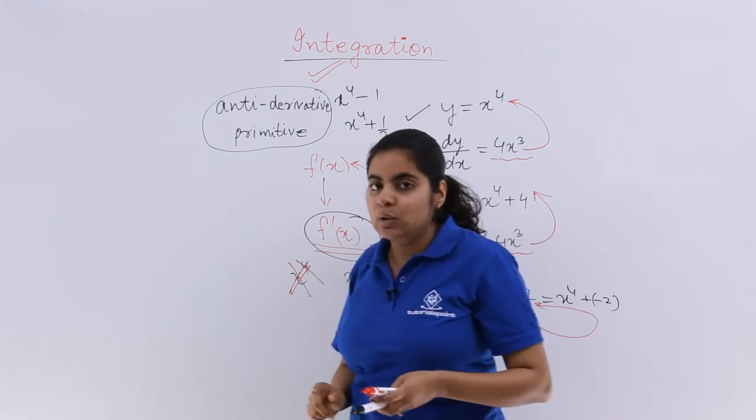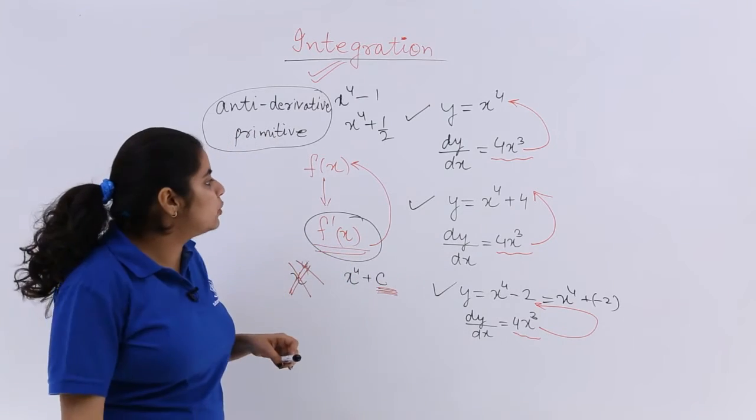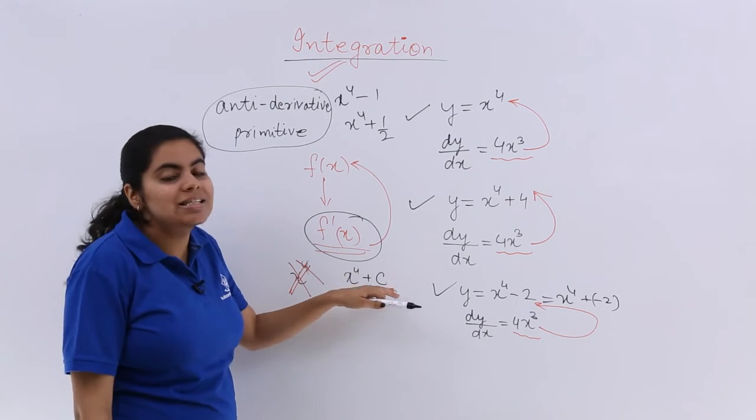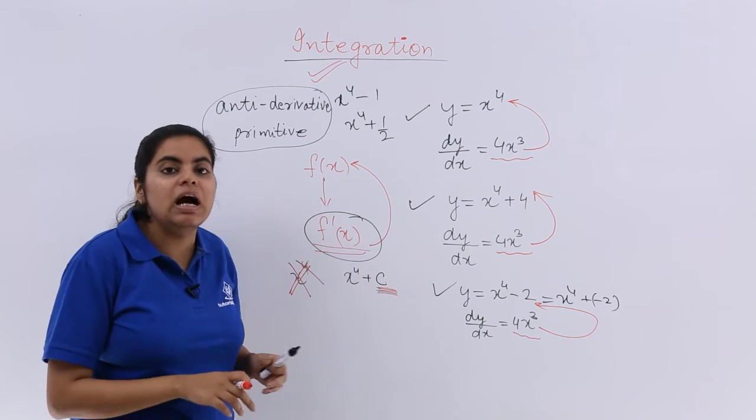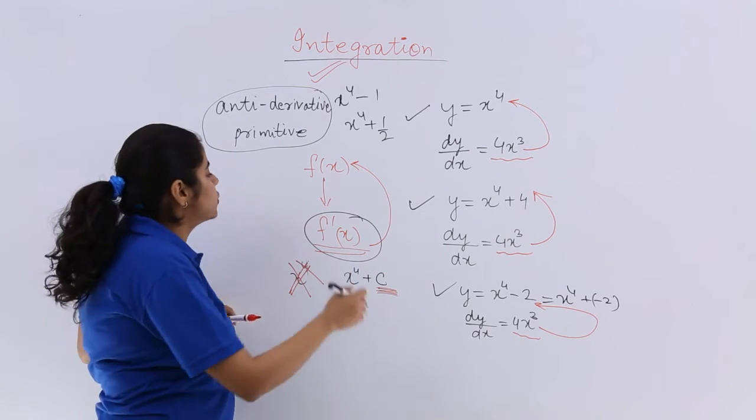So anti-derivative and primitive is the other word. The next important thing that you have to know is always this arbitrary constant would not be added. We are going to study 2 types of integration here.